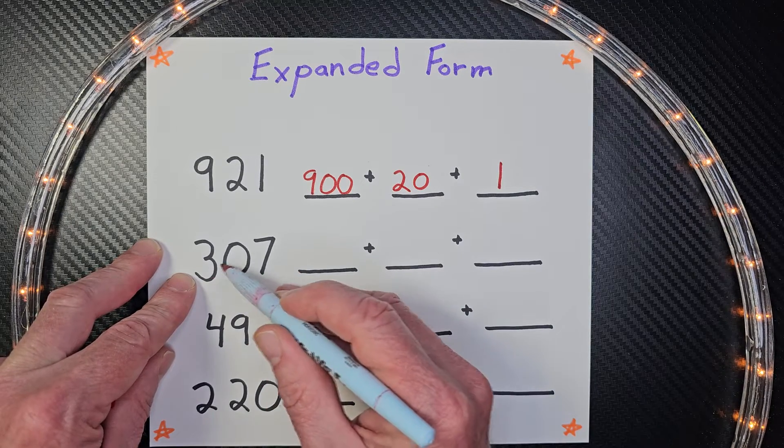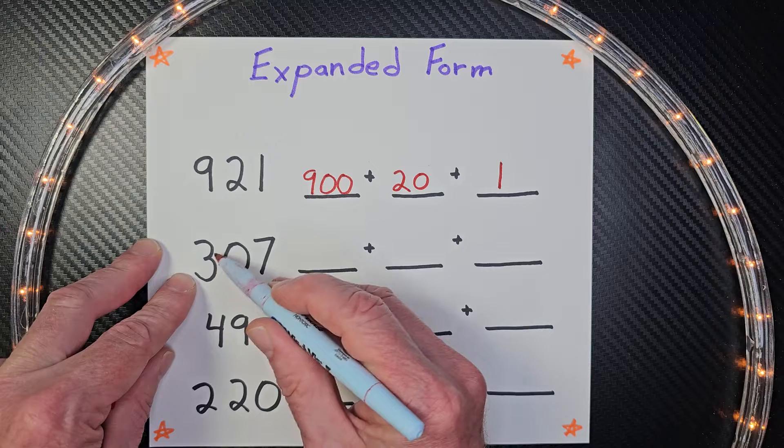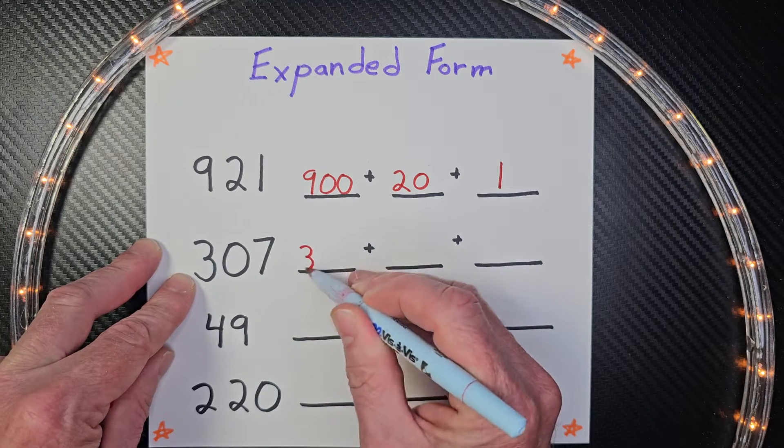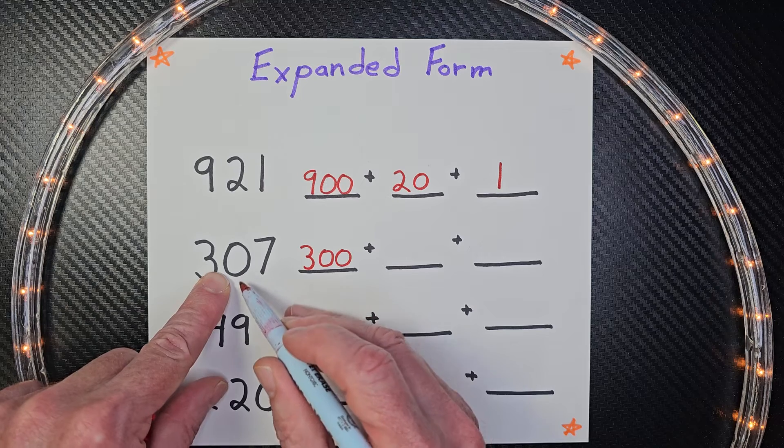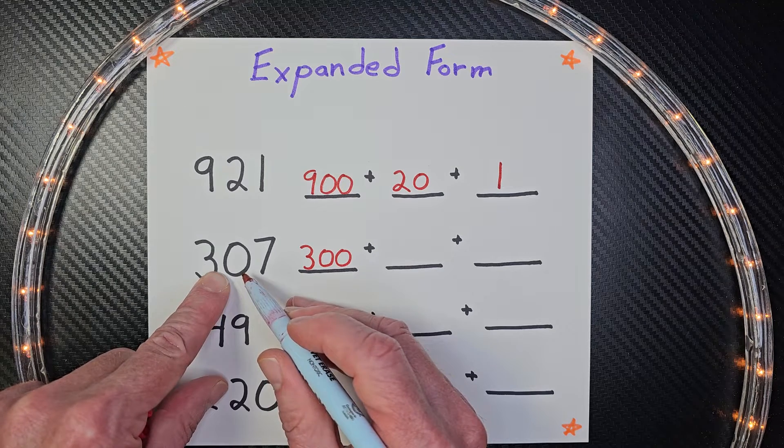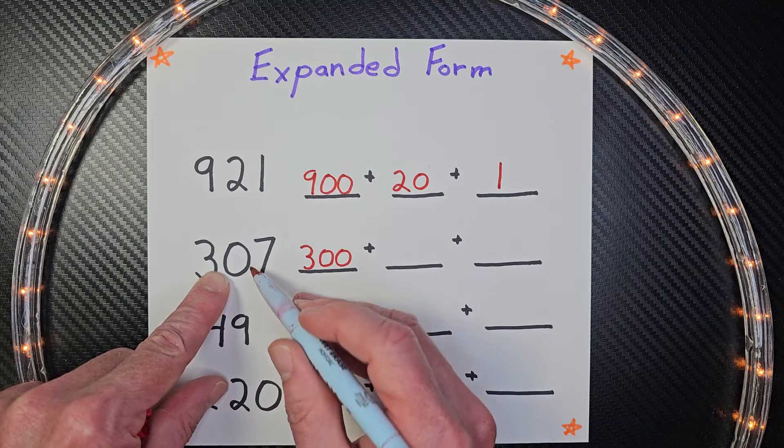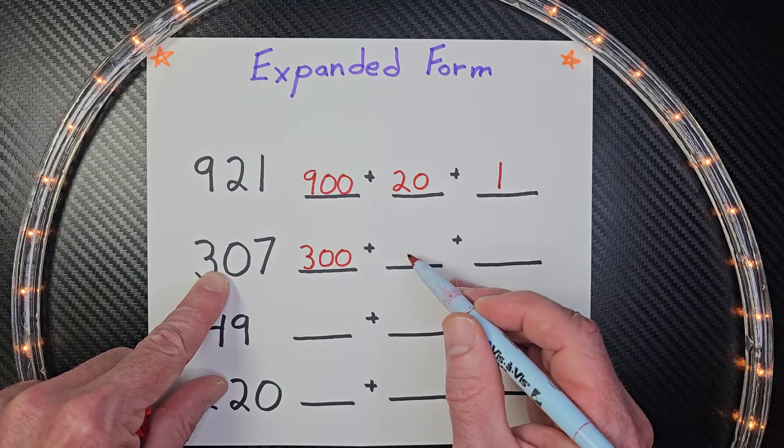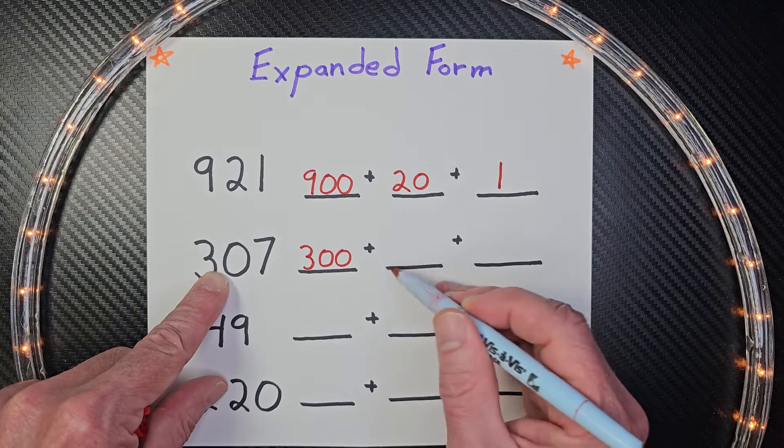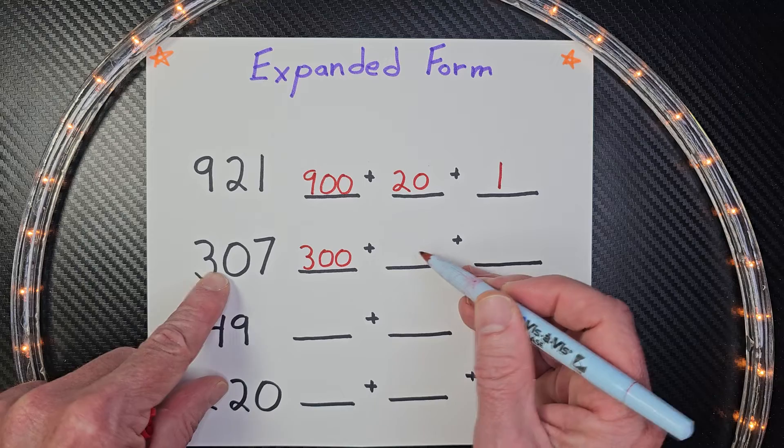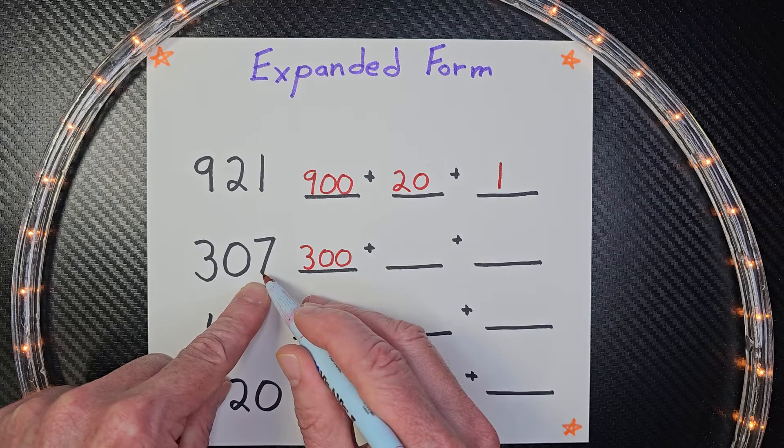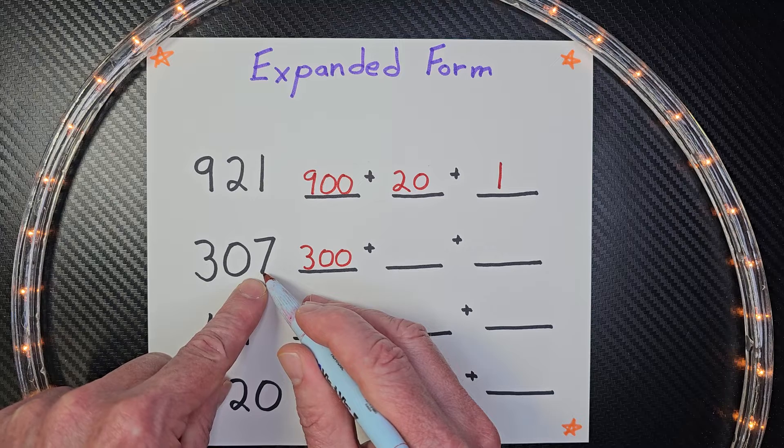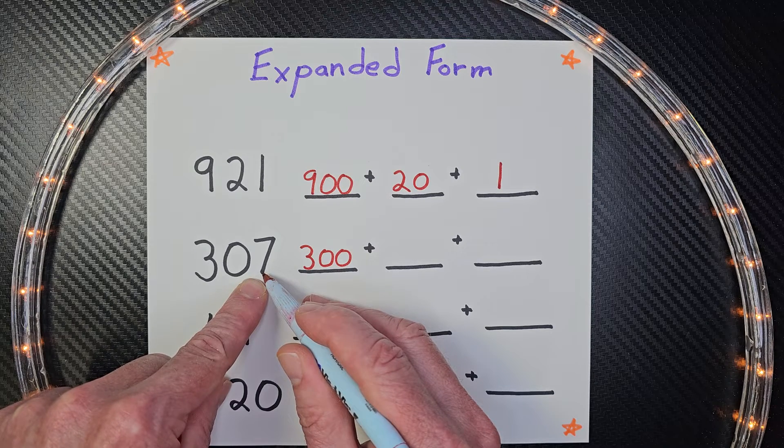Okay, this 3, what place value is it in? It's in the hundreds. So it would be 300. What about this next number right here? A little tricky, isn't it? That's a zero. And what place value is it in? It's in the tens. It's just a plain zero. You don't even need to put anything right there. You can even just leave it blank. Then we go on to the next one. Here is the 7. This is in the ones place. So it's just 7.